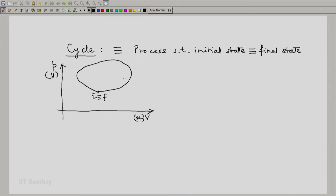This is the depiction of a quasi-static cycle. Let me label it as A. So A is a quasi-static cycle.